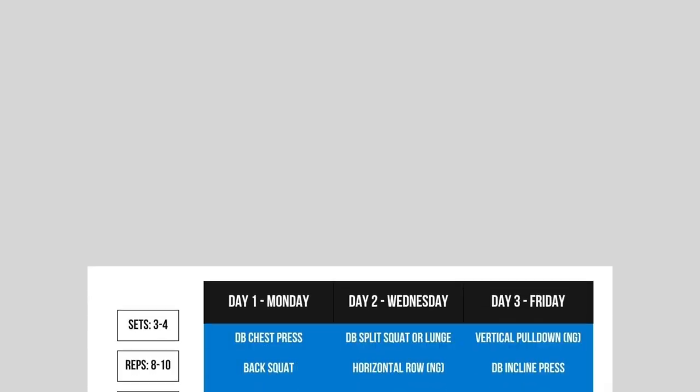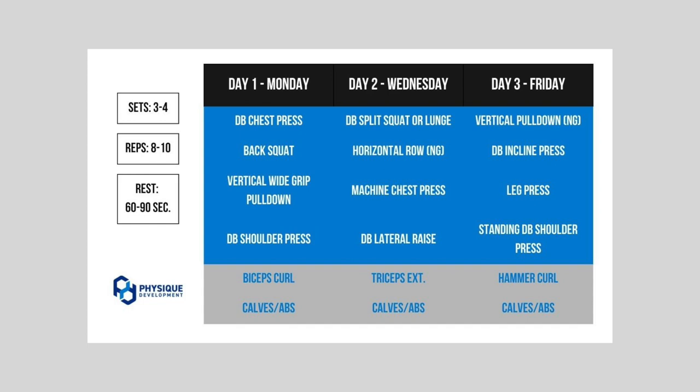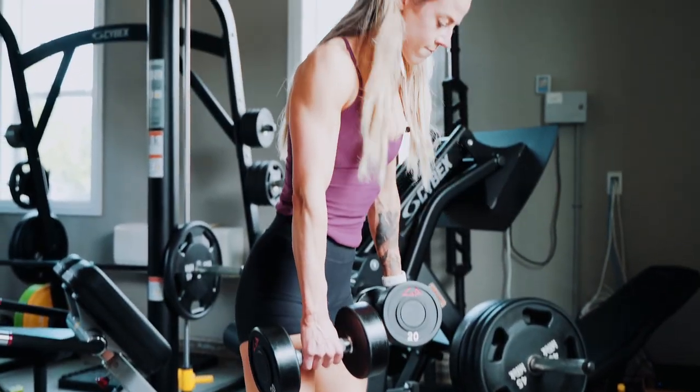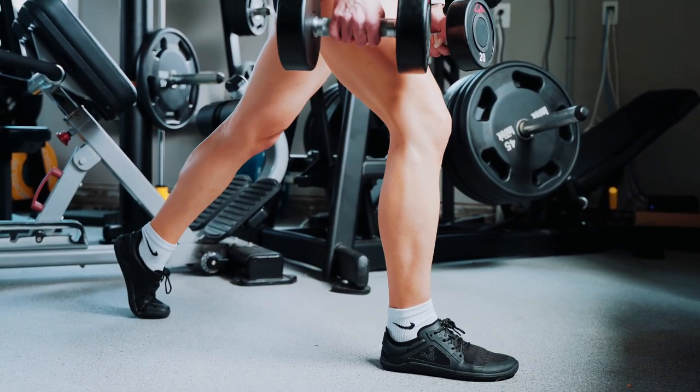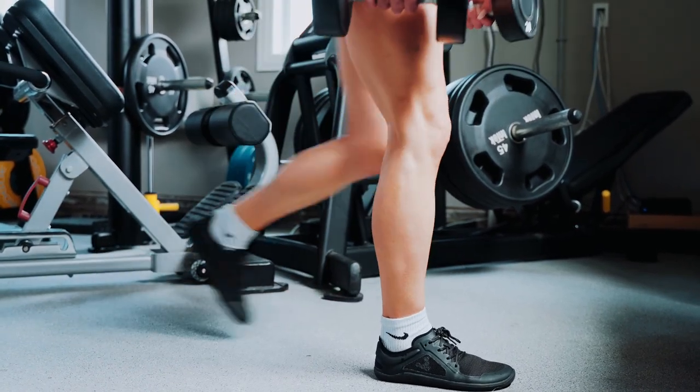To put it all together, you may be wondering how many reps and sets to actually perform. When getting started, I think hitting three to four sets of every exercise, eight to ten reps, and resting between 60 and 90 seconds between sets is going to be the best bet. As you get more advanced and start to tune in to what works best for you, you can adjust things up or down depending on your performance, recovery, and how much time you have each day you go to the gym.